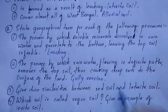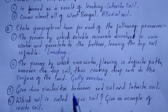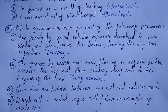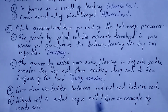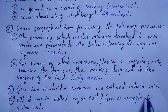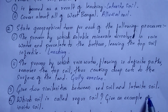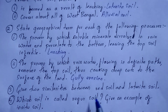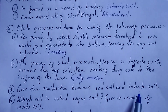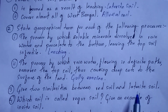The next question: give two similarities between red soil and laterite soil. I am telling you one similarity and you are going to write the other in the comment section. The first similarity is that both red soil and laterite soil are red in color because they are rich in iron oxide. Write the second similarity in the comment section.